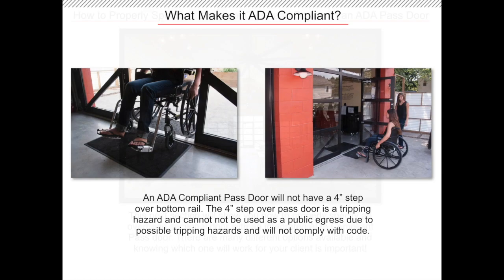The ADA compliant pass door was created for architects and designers. Architects kept inquiring about a product like this, so the overhead door industry listened and created the overhead sectional door with an ADA compliant pass door. Before this product was available, the only pass door on the market was a 4-inch step-over pass door. The pass door has a 4-inch bottom rail posing a tripping hazard for the public, and this type of pass door is never to be used in a public setting.